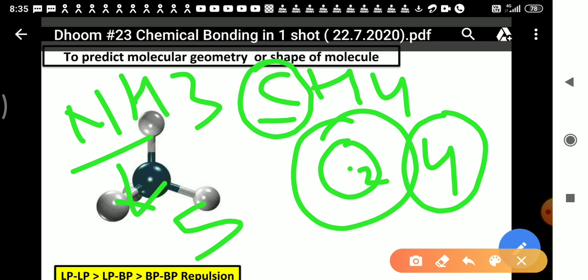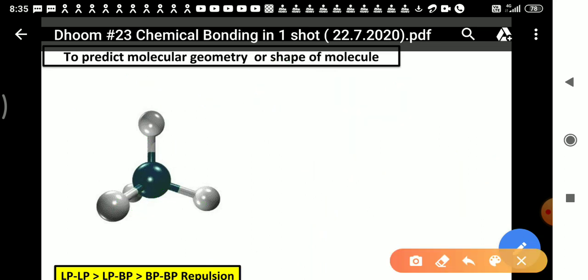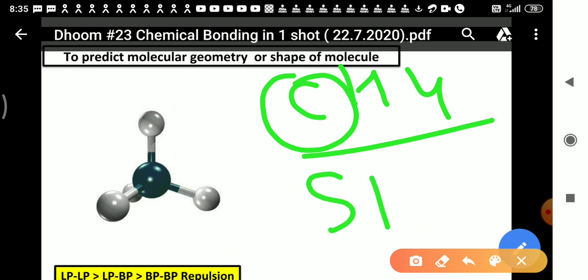This should be clear to you, and you need to keep in mind that as we took the example of CH4, the complete family of C - carbon, then silicon, and so on - for all these elements in this group, we will consider 5 electrons in the valence shell.